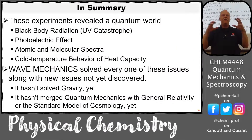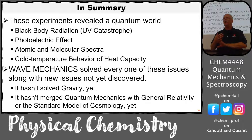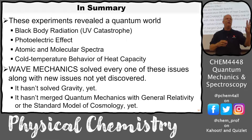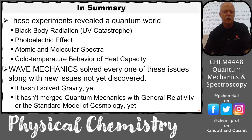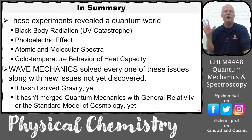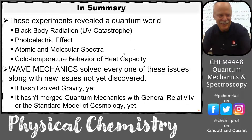In summary, four experiments revealed the quantum world and we just had to figure out the math behind it. Schrödinger took wave theory and made quantum mechanics — wave mechanics. It hasn't solved gravity yet, and we still haven't merged quantum mechanics with general relativity or the standard model of cosmology. So there's still work to be done — hopefully you'll contribute to that.